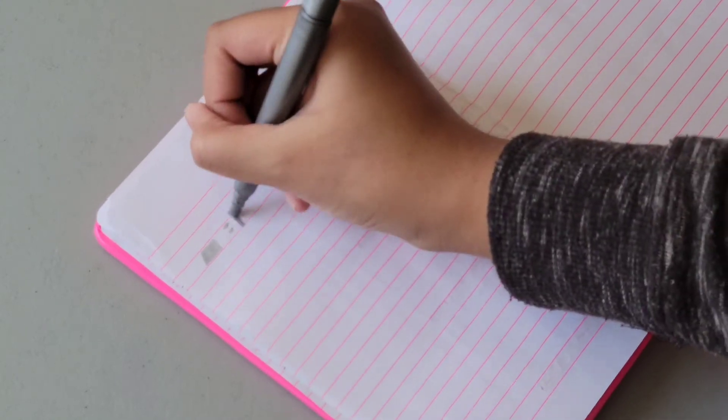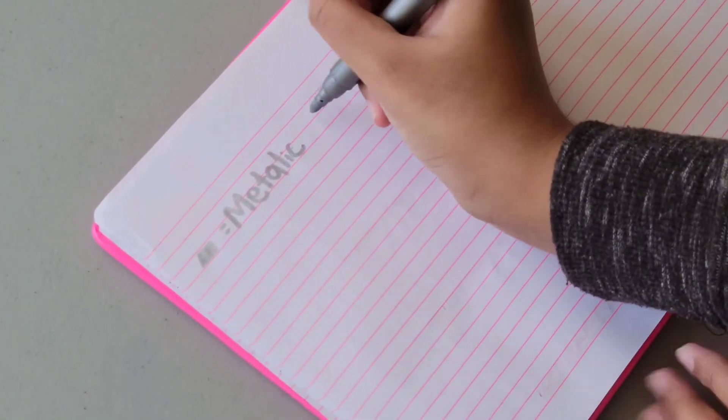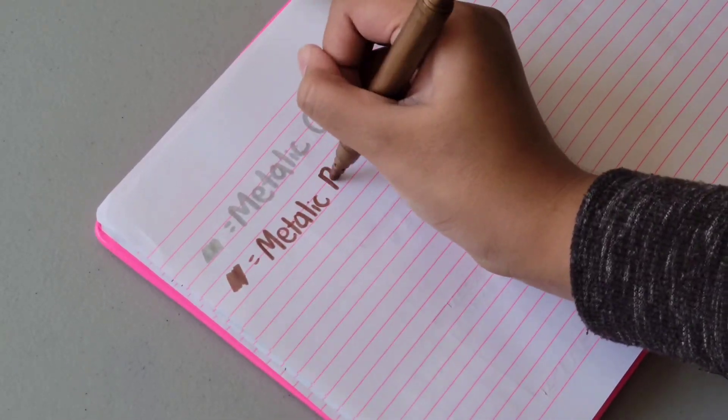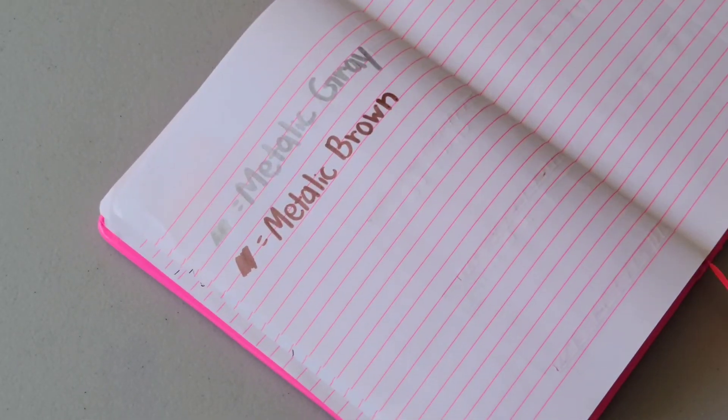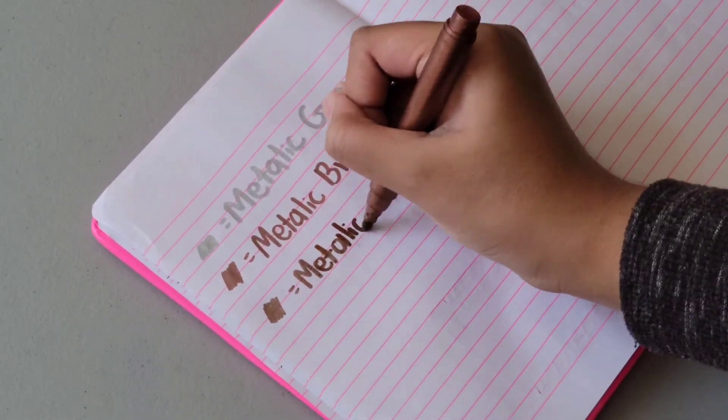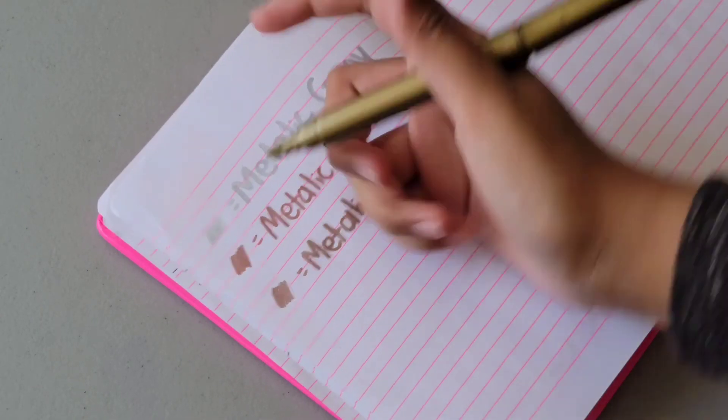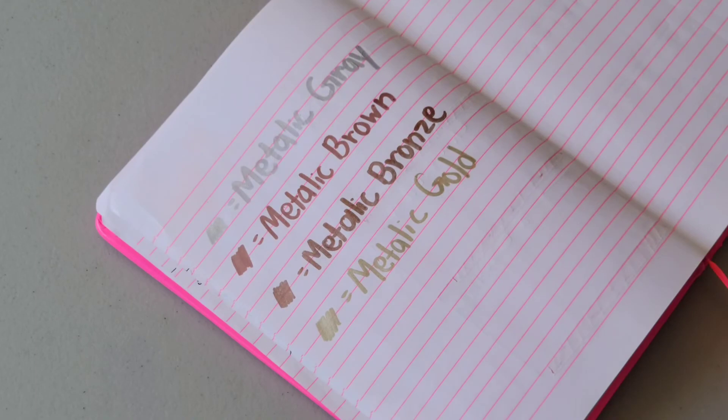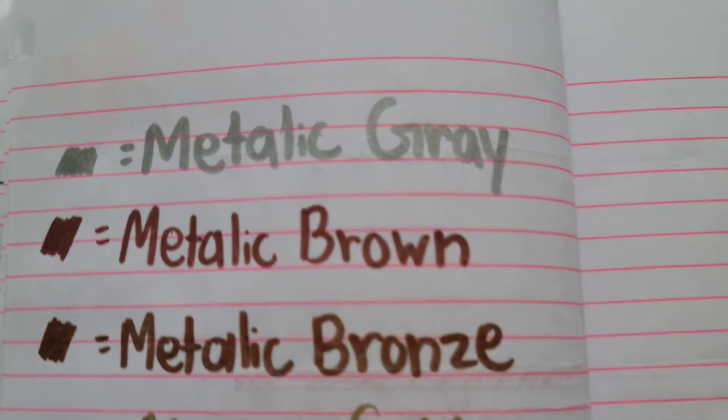Now, let's just test it out. Over here, I'm just going to be testing it out. That is how the metallic gray works. Next up is the metallic brown. And then, here is the metallic bronze. That is how it looks like. And the last one is the metallic gold.